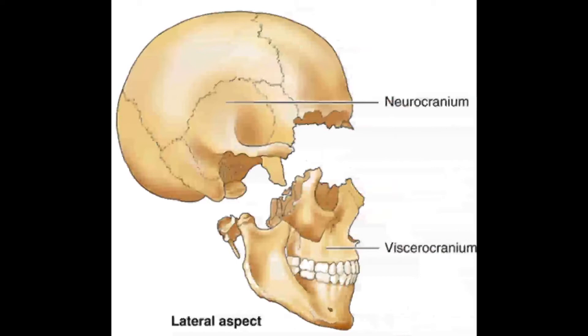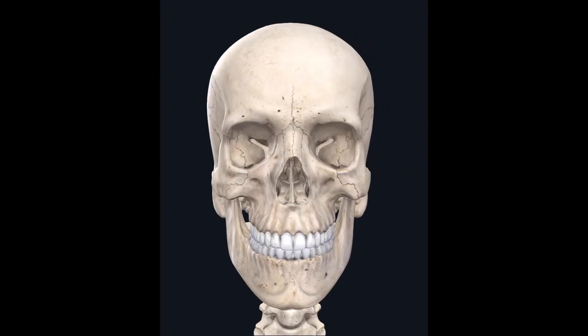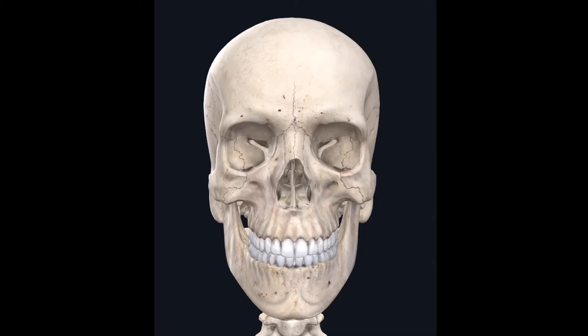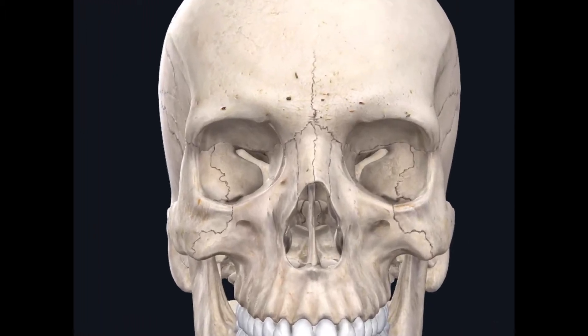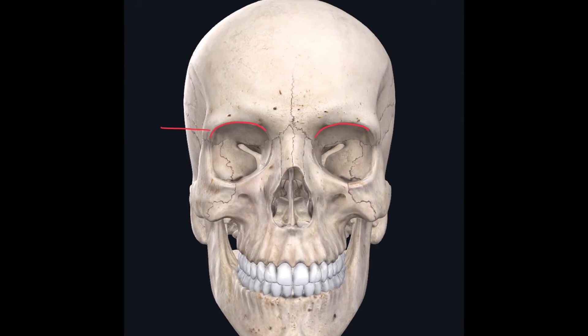We're going to start by learning the landmarks found in the frontal bone. We're only going to learn three. The first one is found in the bony orbit — this ridge line on the superior portion of the bony orbit is called the supraorbital margin of the frontal bone.